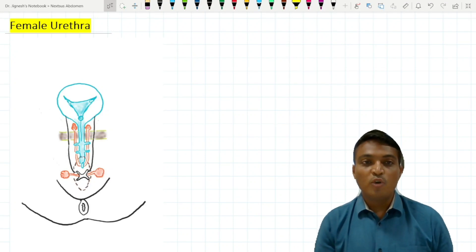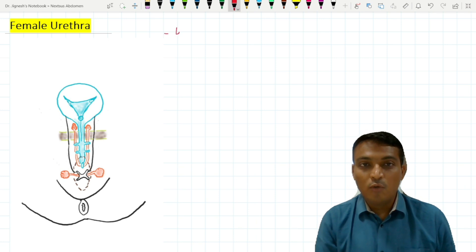Hello friends, let's see the anatomy of the female urethra. The female urethra is around 4 centimeters long and 6 millimeters in width.